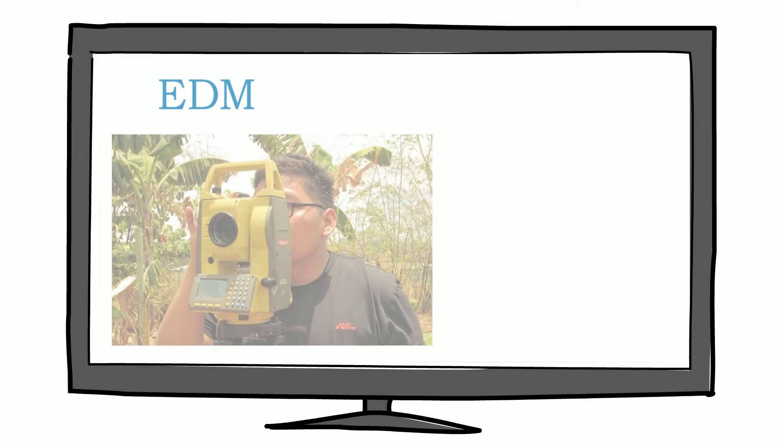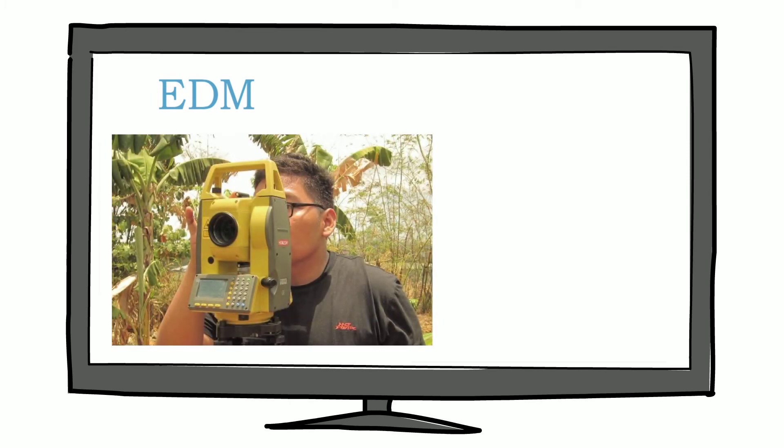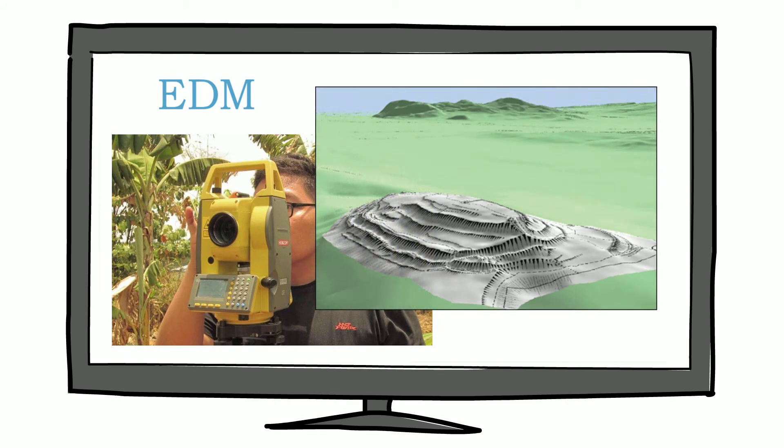The use of an electric distance measure or total station records horizontal distance and height difference and makes the surveying process more efficient by plotting the information onto the device which can then produce digital results such as 3D ground models.